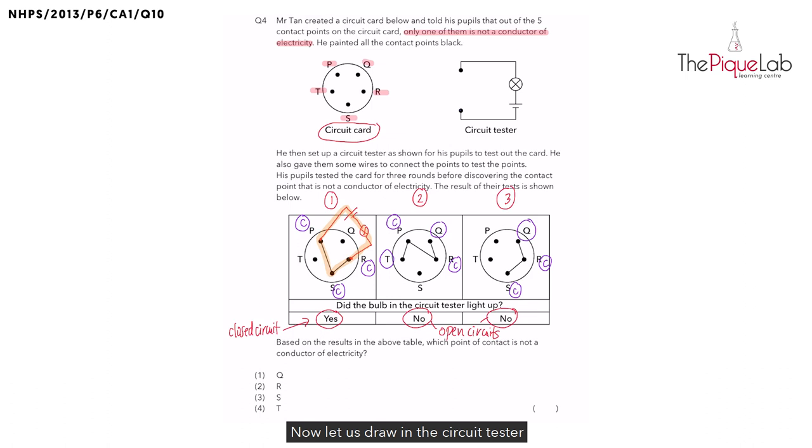Now let us draw in the circuit tester so that we can better visualize this. I'm going to draw in the circuit tester connected to point Q and S. Remember, electricity can flow through points R and points S as they are conductors of electricity. But did the bulb light up in this case? It did not. So we know that Q must be an insulator of electricity that stops electricity from flowing through circuit 3, preventing the bulb from lighting up.